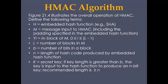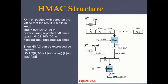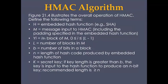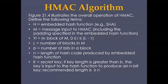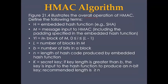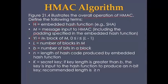Now let's look at the HMAC algorithm. The figure illustrates the overall operation of HMAC and defines the following terms: H is the embedded hash function; M is the message input; y_i is the i-th block of the message; L is the number of blocks in M; b is the number of bits in a block; N is the length of the hash code; K is the secret key.